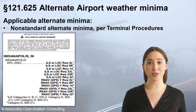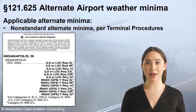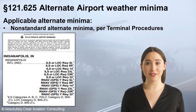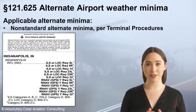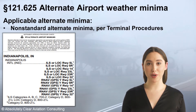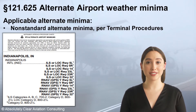Determine which runways are suitable. Consider the wind direction for the estimated time at which the aircraft would arrive following a diversion after reaching the planned destination. Also consider the availability of the runway length needed to comply with the aircraft performance requirements. Check the NOTAMs for possible instrument approach outages and runway closures or length restrictions.